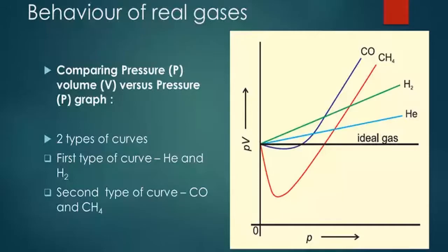This is the plot between PV and P — the product of pressure and volume versus pressure. I have plotted four graphs. The black line is for the ideal gas. It is parallel to the pressure axis because as pressure increases, PV remains constant — that is the ideal situation. But for the other gases, which are non-ideal, which are real gases, the graphs are different.